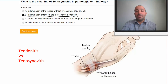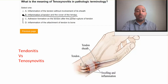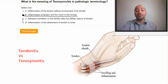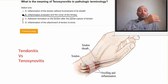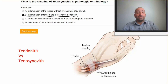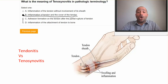So tenosynovitis is the inflammation of the tendon and the cover of the tendon, which happens in some areas more commonly, such as in the wrist area. This condition is called De Quervain's disease, which is the pain of the movements of the thumb due to overuse of thumb-type activities. So the answer to this question is B: inflammation of tendon and the cover of the tendon.